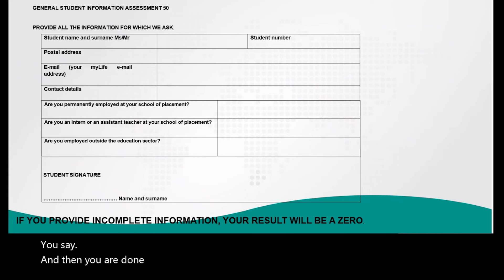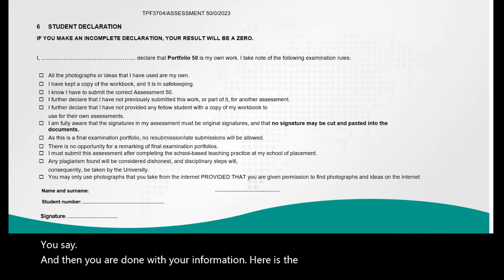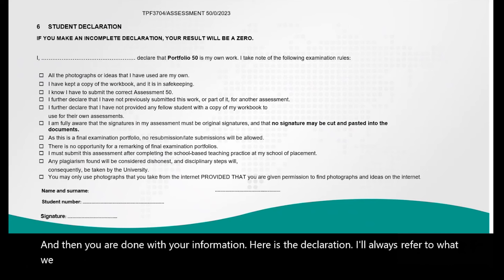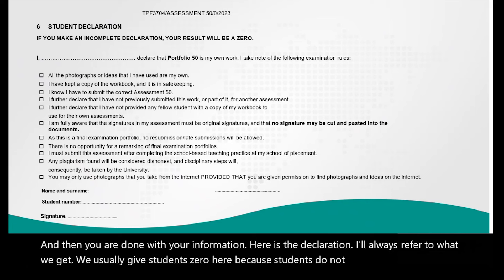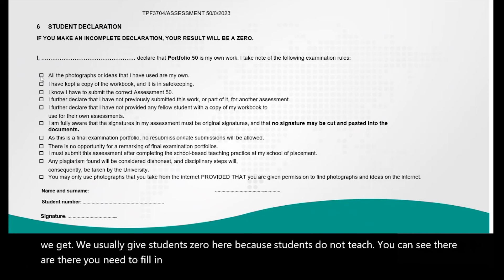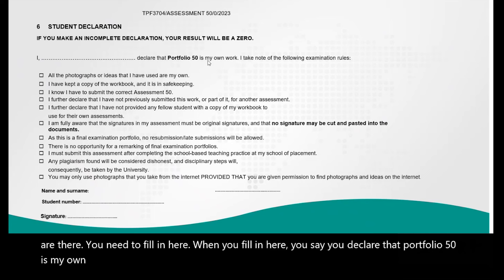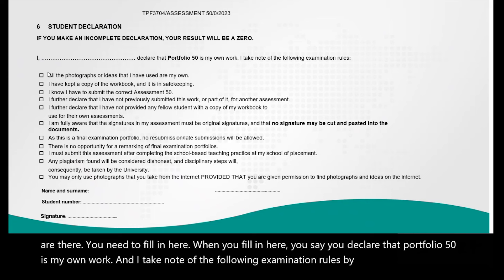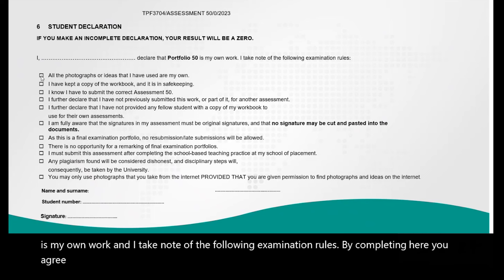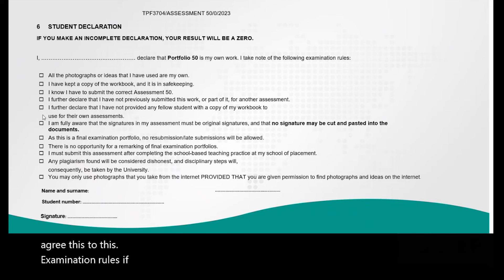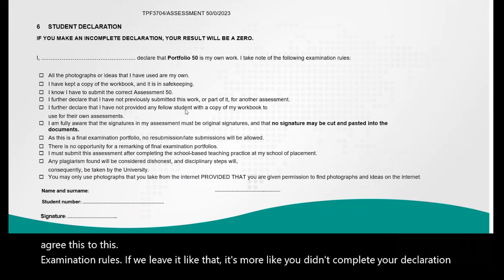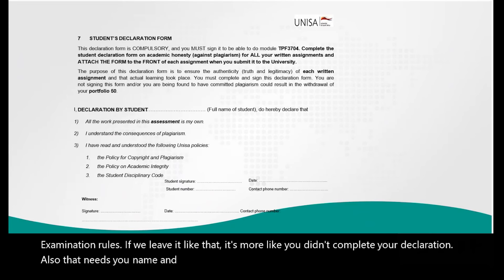Once you answer the questions and sign, you are done with your information. Here is the declaration — we usually give students zero here because students do not tick it. You can see that you need to fill in this section. When you fill it in, you declare that Portfolio 50 is your own work and you take note of the examination rules. If you leave it blank it means you didn't complete your declaration. It also needs your name and signature.